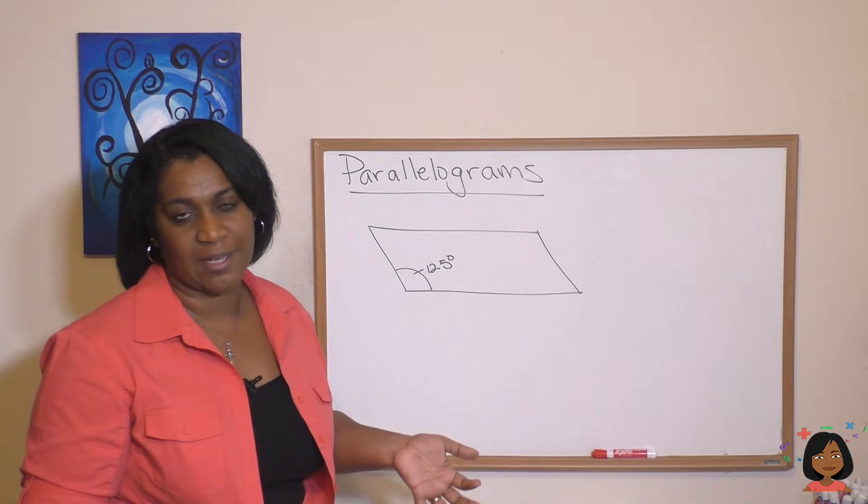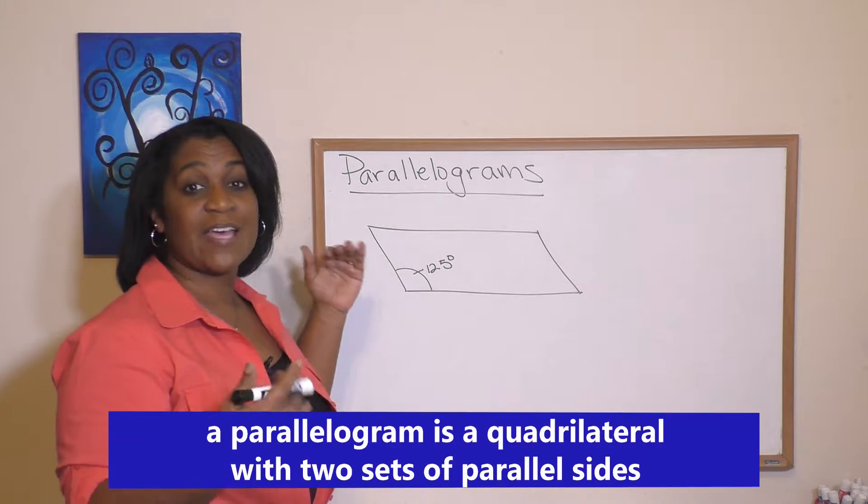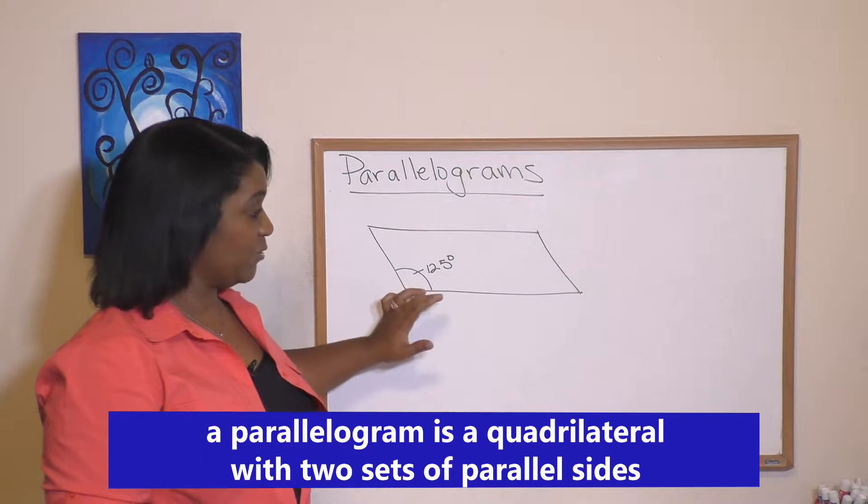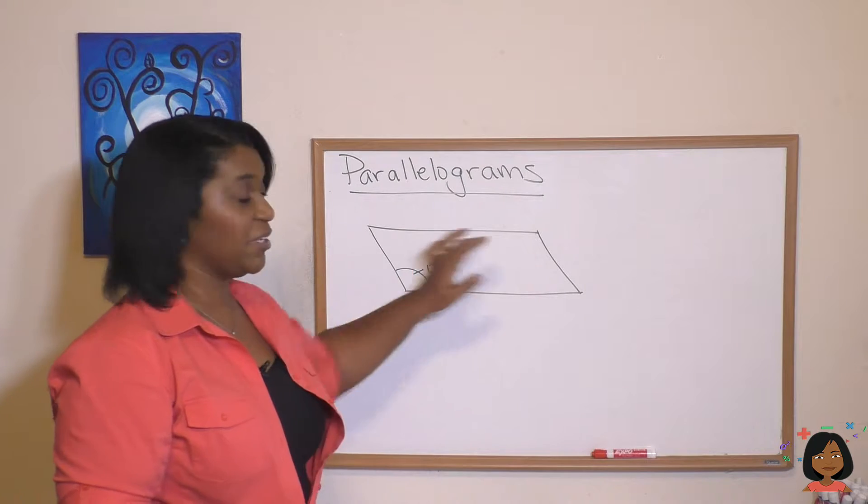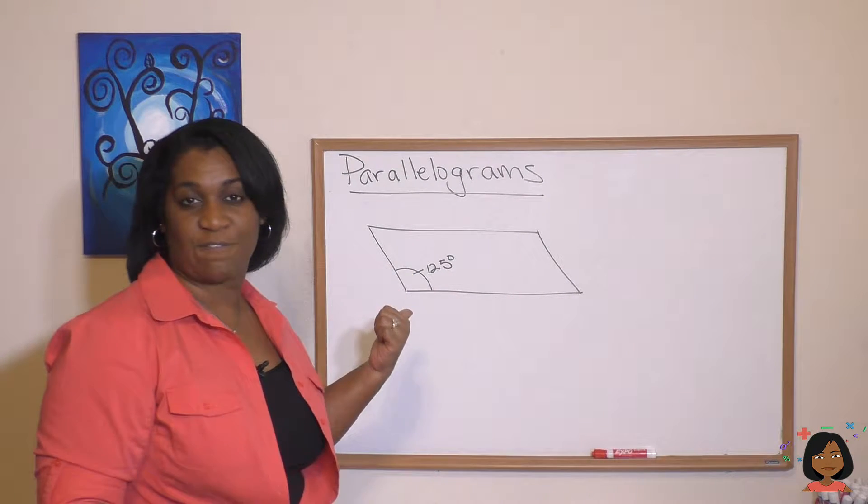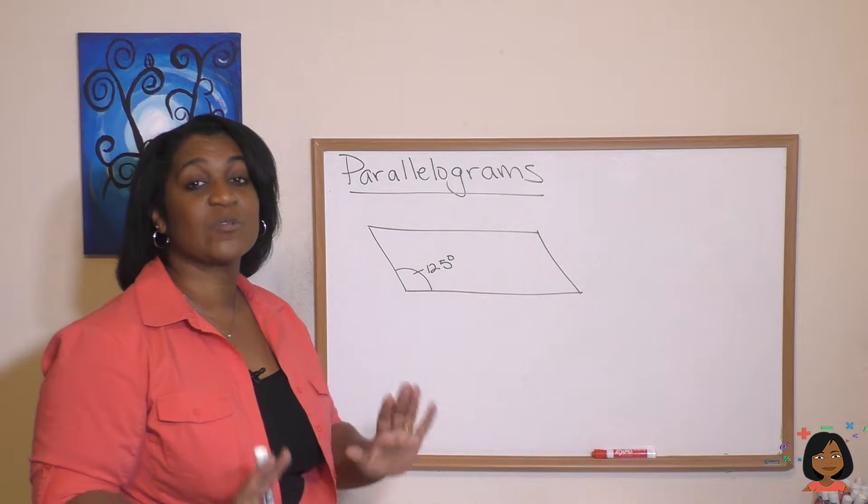Now let's even just back up for a second. What does parallelogram even mean? It means it's a figure that has two sets of parallel sides. So we've got here one here and here, that's one set. Here and here, that's another set. Okay, so back to our 125 degrees. How can we use this information to find out the other angles of this parallelogram?